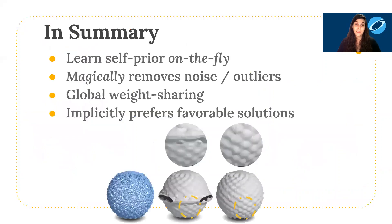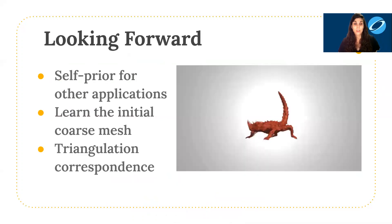In conclusion, we propose a method for surface reconstruction which learns a self-prior on the fly from the input point cloud itself. The self-prior is effective at removing outliers and noise, and key is the global weight sharing property, which implicitly favors good solutions.